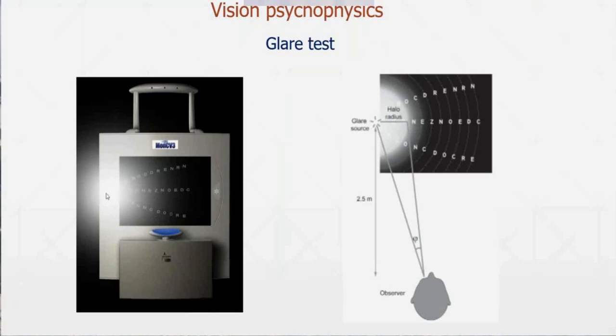Those glare sources can also be used for low vision people with visual acuity less than 0.3, which is 20 over 60. We cannot use these optotypes because the size of the letter is too small. In that case, we can present larger optotypes and use the true light sources on both sides.